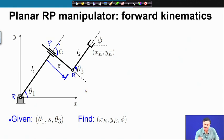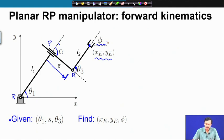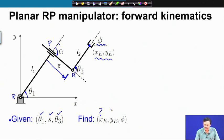We have the end effector positional coordinates x_e and y_e and the orientation coordinate phi. So we have 3 inputs and 3 outputs. The forward kinematics problem is: given theta_1, s, and theta_3, find x_e, y_e, and phi.